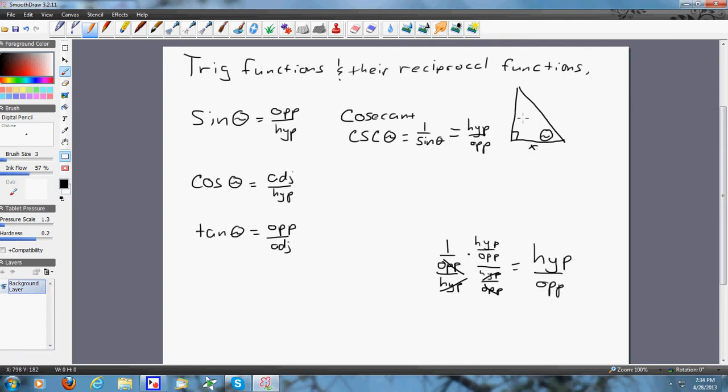And like I said, we'll call this x, y, r. So the next one is the secant of theta, and we abbreviate that sec, and that's the reciprocal of cosine, which just gives us the hypotenuse over the adjacent.